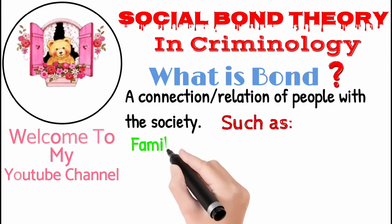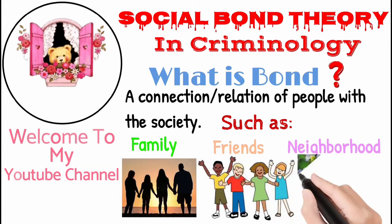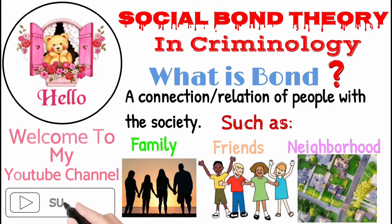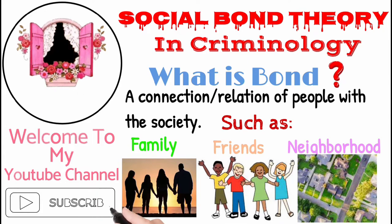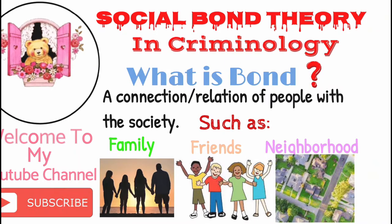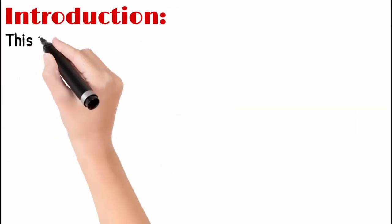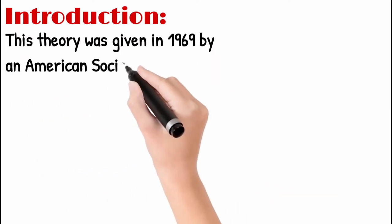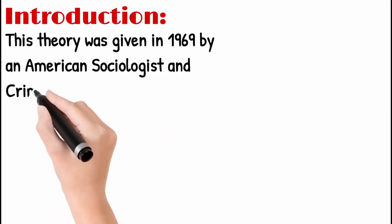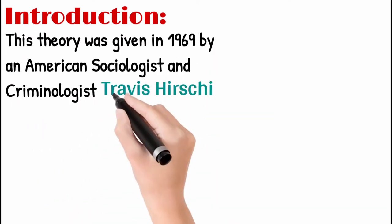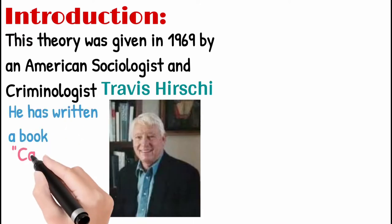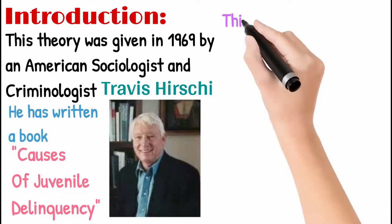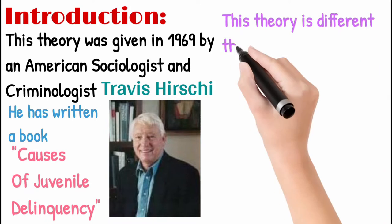Before starting the video, I would like to request that if you are new on my channel, please do not forget to subscribe. Introduction to Social Bond Theory: this theory was given in 1969 by an American sociologist and criminologist Travis Hirschi. He has written a book, 'Causes of Delinquency.'